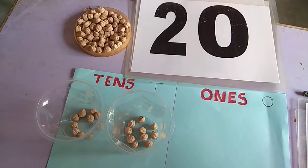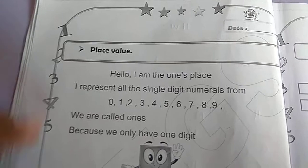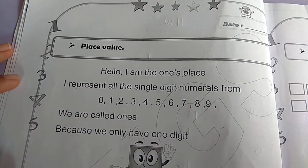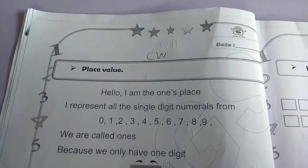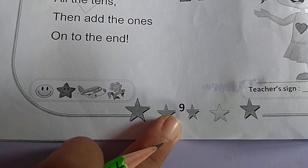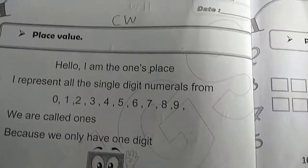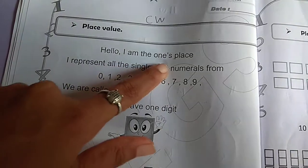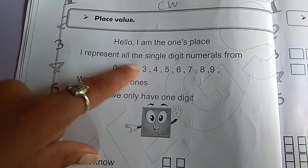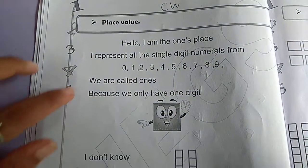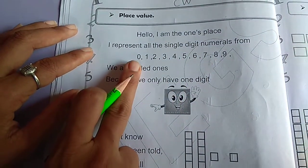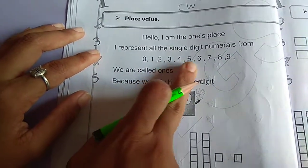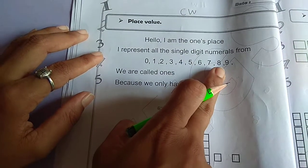Now we will go through the classwork portion. This is our today's classwork — page number nine in the worksheet. Now we sing this rhyme, please sing along with me. Hello, I am the ones place. I represent all the single digit numerals from zero to nine: 0, 1, 2, 3, 4, 5, 6, 7, 8, 9.